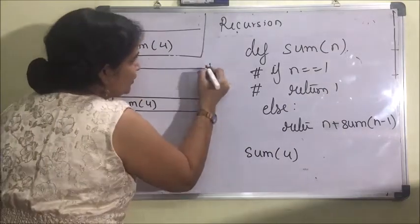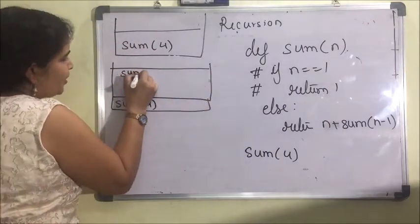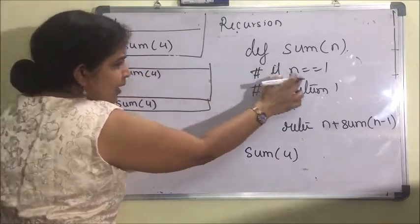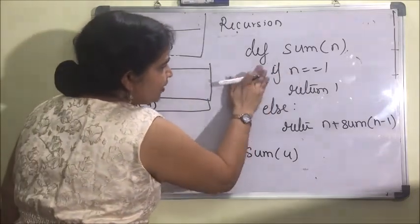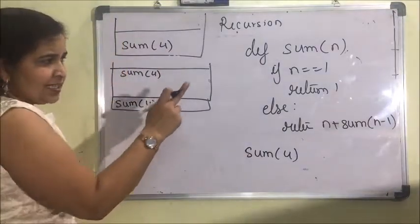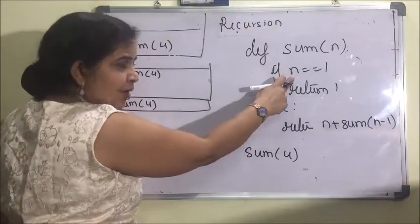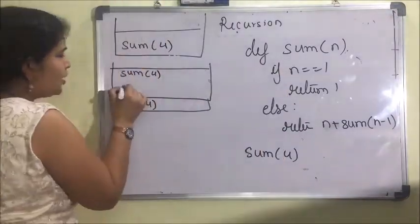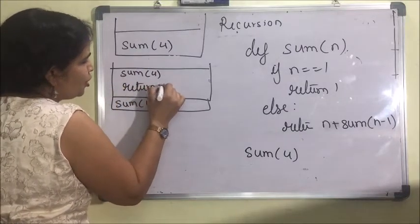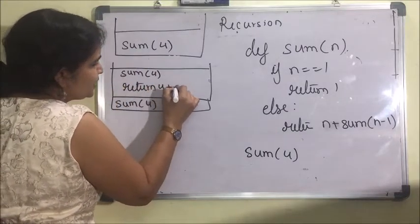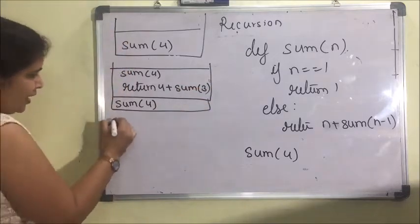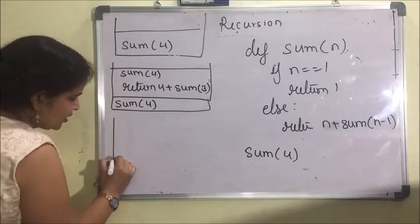It will call the function sum(4) and come here. It checks whether n equals 1 or not. n is 4, so it is not equal to 1. So it goes to the else branch and executes: return 4 plus sum(n minus 1), that is sum(3). In the next recursion...